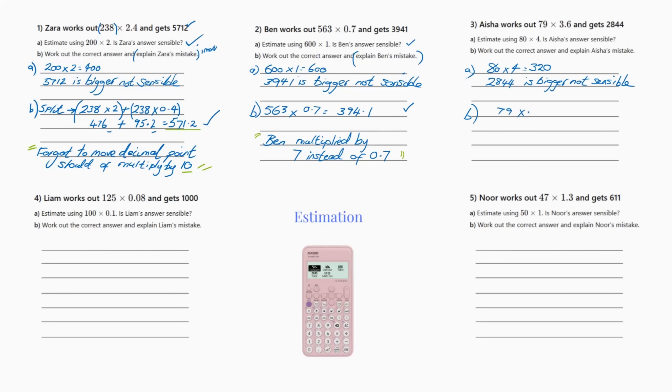Work out the correct answer first. So the correct answer is going to be 79 times 3.6. Popped it into my calculator and I'm at 284.4. Now that's the answer, that's the right answer. But now I've got to explain Asia's mistake for another mark, and Asia's mistake is what did she do wrong? She multiplied...